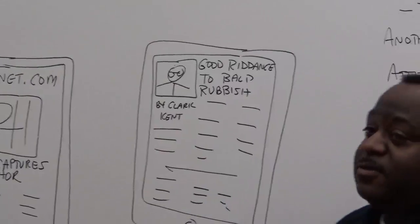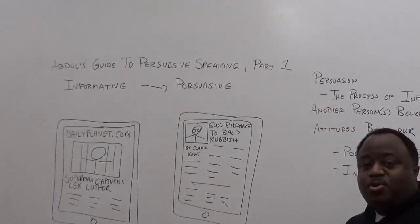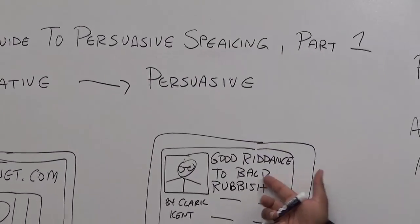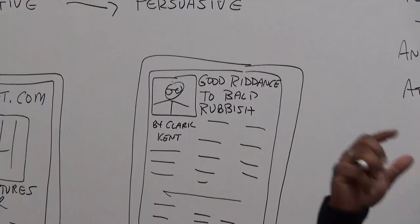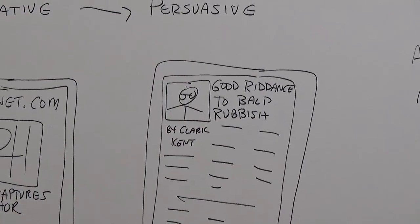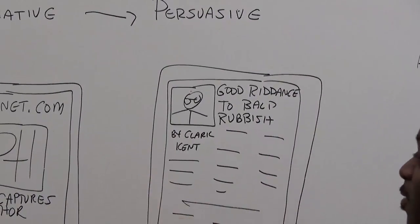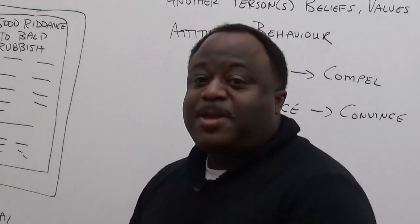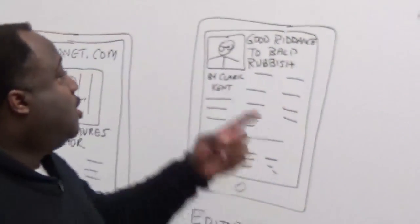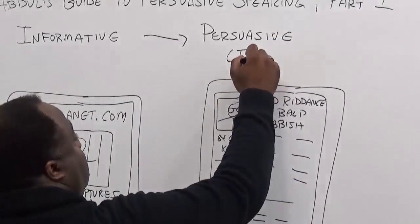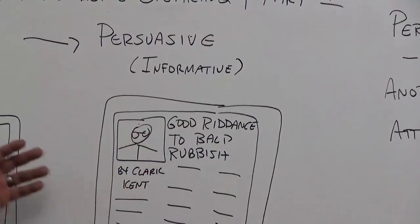Now we switch from informative speaking to persuasive speaking, which means you get to have an opinion — kind of like the editorial part of a news website. Clark Kent can have his opinion about Superman capturing Lex Luthor, but even though it's an opinion, that opinion still has to be based on facts. Otherwise, we don't have an informed opinion. So even though this is persuasive speaking, it's still got a little bit of that informative element attached to it. You've already had a taste of persuasive speaking when you gave your informative speeches, because you had to convince the audience to pay attention.